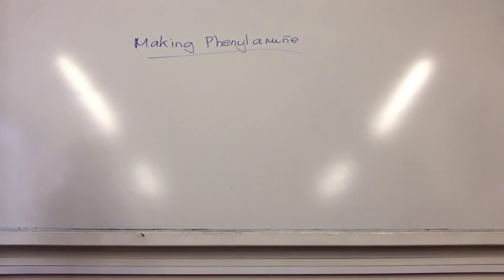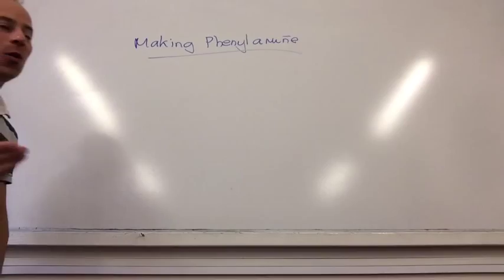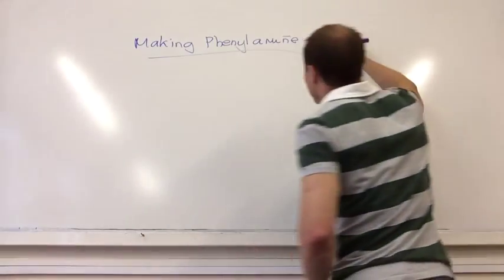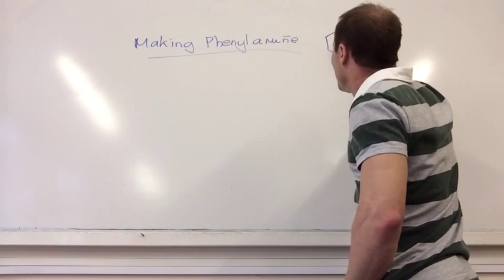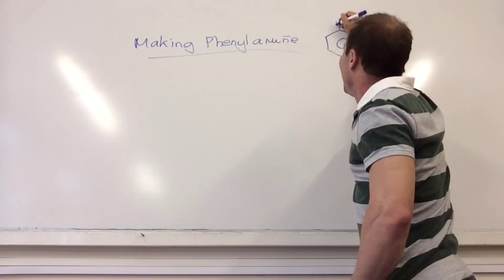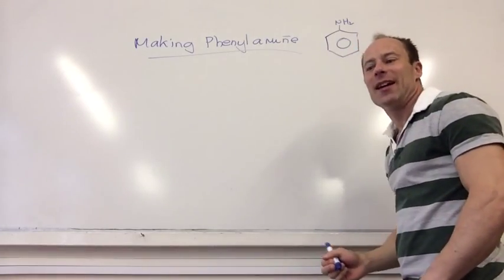So that's how you make an amine with just a normal carbon chain. What we're going to look at now is how we make phenolamine. What do we reckon phenolamine is? Phenol and an amine. Well, a phenol group, which is that, and an amine group. So he's that guy there.